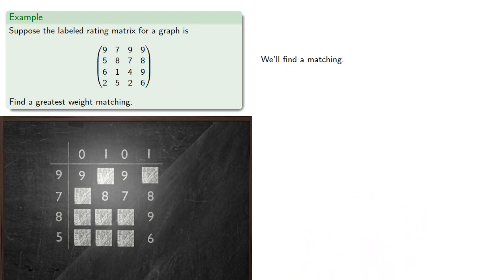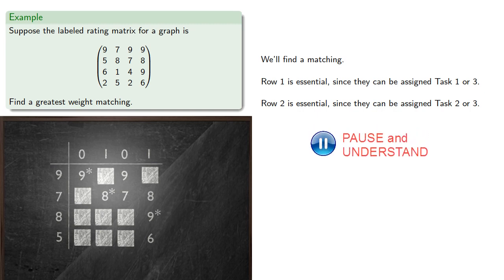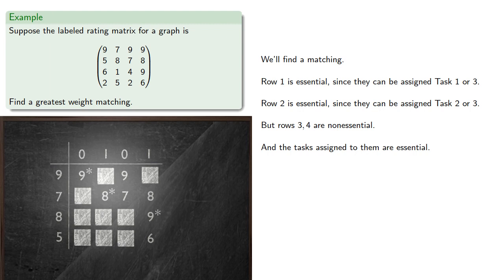We'll find the matching. And we see that row 1 is essential, since they can be assigned task 1 or 3. And likewise row 2 is essential, since they can be assigned task 2 or 3. But rows 3 and 4 are non-essential, and the tasks assigned to them are essential. So we'll decrease the labels of rows 3 and 4, and increase the label of column 4.